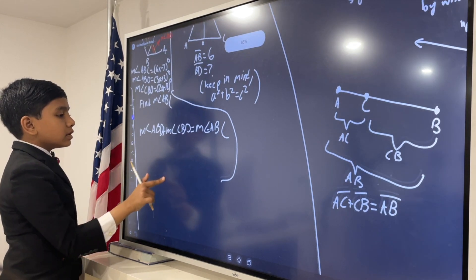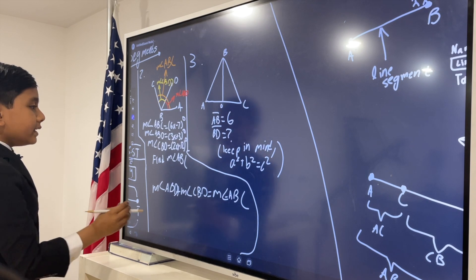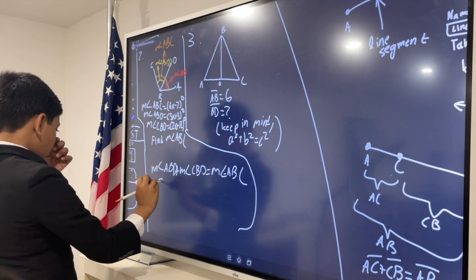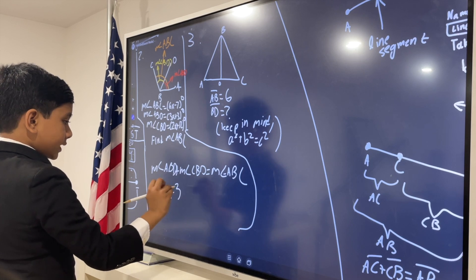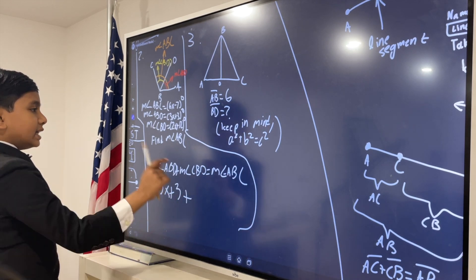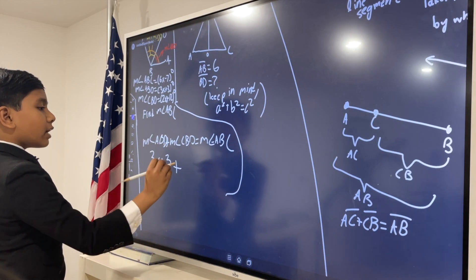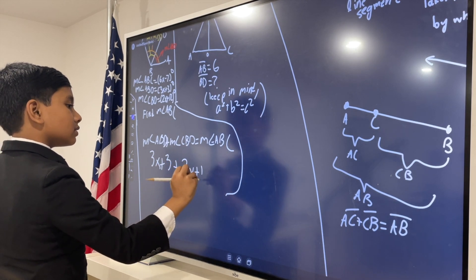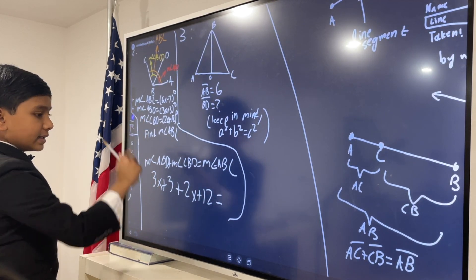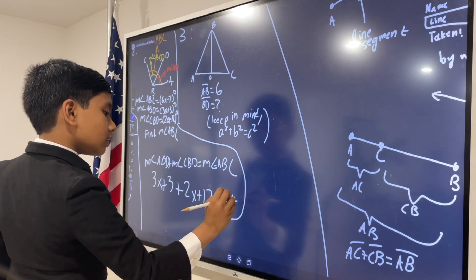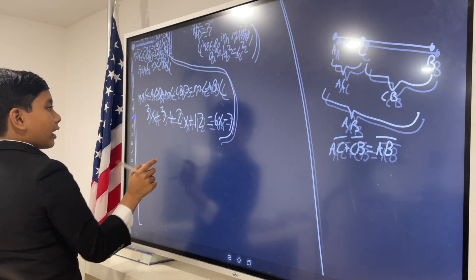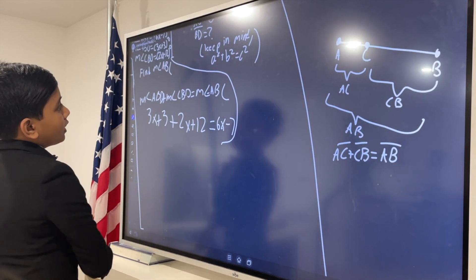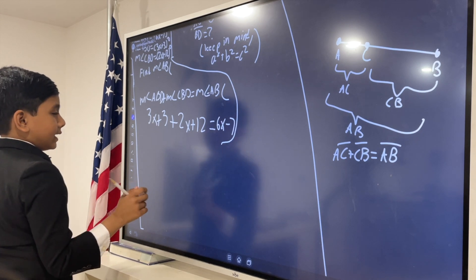Now, we plug in. So, ABD is 3x plus 3. CBD is 2x plus 12. And, ABC is 6x minus 7. Now, using this, we can find out what x is and thereby what ABC is.